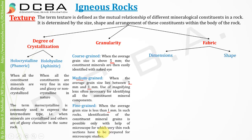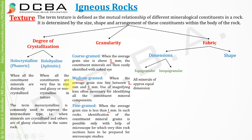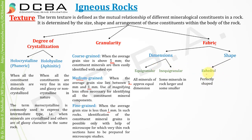Coming to fabric, we first learn the terms dimensions and shapes. In dimensions we have equi-granular, meaning all minerals have approximately equal dimensions, and inequi-granular, where some minerals are large and some are very small. For shape, there are three types: euhedral, which is a perfectly shaped mineral; subhedral, which is semi-perfect; and anhedral, which is irregular.